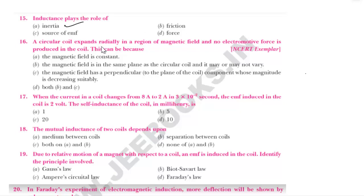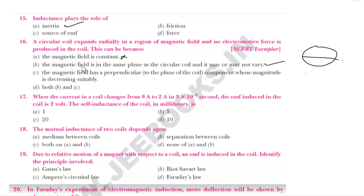Next: a circular coil expands radially in a region of magnetic field and no EMF is produced in the coil. The reason can be: the magnetic field is in the same plane as the circular coil and it may or may not vary. Also, the magnetic field has a perpendicular component whose magnitude is decreasing suitably. Both B and C can be the answer.